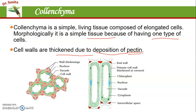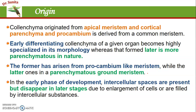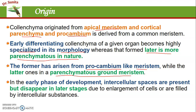The cell wall of colenchyma can be made at corners or tube-like structures — there are different types of thickening. The main role of colenchyma is to provide mechanical strength to plants. Like parenchyma, it also arises from apical meristem and cortical parenchyma, and it also arises from pro-cambium-like meristem.